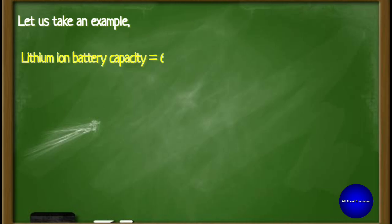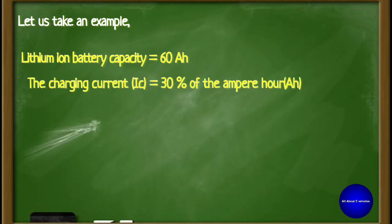Lithium-ion battery capacity of 60 ampere-hours. What will be the charging time and current required for this 60 ampere-hour battery? The charging current is 30% of ampere-hours, that is 18 amperes. This is the required charging current for this lithium-ion battery.